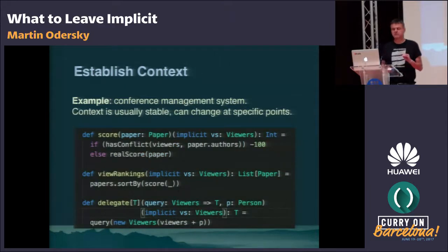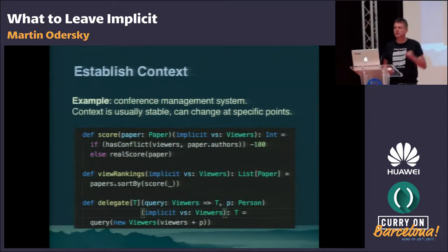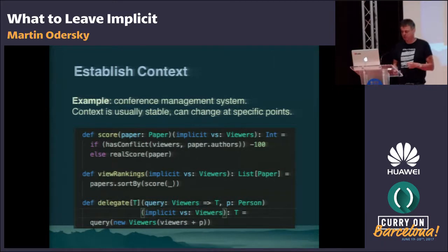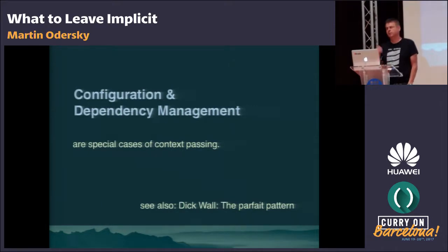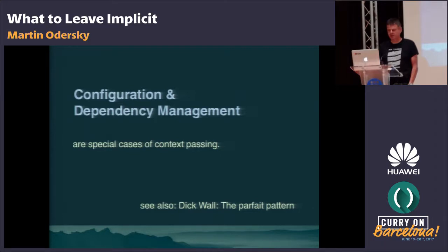Context is typically not always global and fixed for the whole program — for some subprogram you might want to change it. The next use case is configuration and dependency management, which dependency injection frameworks are for. There's also a design pattern called the parfait pattern proposed by Dick Wall for that. But I want to move on to type classes.